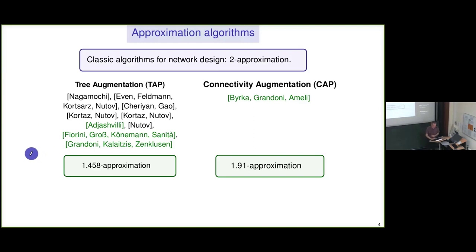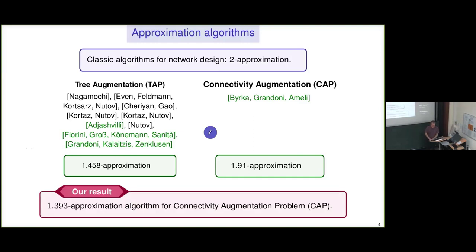In connectivity augmentation, only very recently — about two years ago — there was a paper by Byrka, Grandoni, and Ameli that went for the first time below the factor of two. What I'd like to talk about today is another technique that leads to a significantly improved factor, at least for connectivity augmentation, but also for TAP. TAP is just a special case of connectivity augmentation.